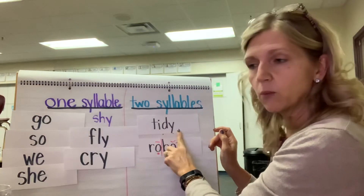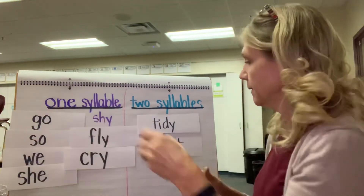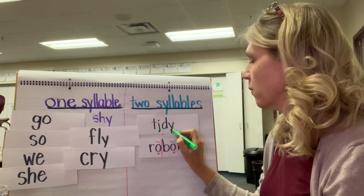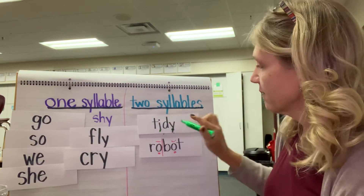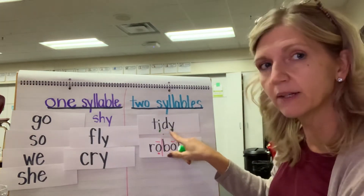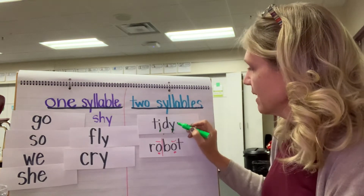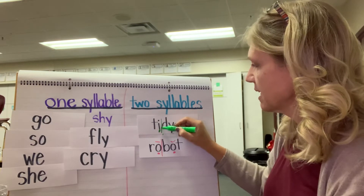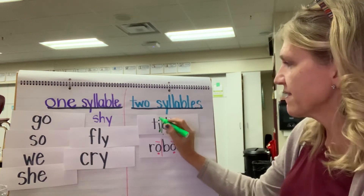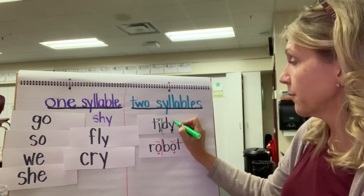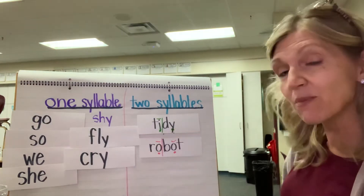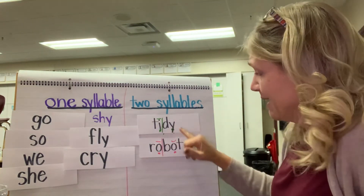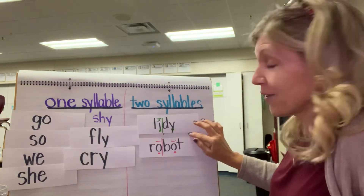This word is T-I-D-Y. Mark your vowels. The first vowel is I and the second vowel is Y. Again, I'm going to see what's between those two vowels — the vowels are apart, so I think it's going to be a two-syllable word. Let's cut it in front of the D, between the I and the D. I would have the open syllable 'ti' and then the open syllable 'dy.' That Y is making the E sound. Sometimes Y makes the I sound at the end of words, and sometimes it makes the long E sound at the end of a word or at the end of a syllable.